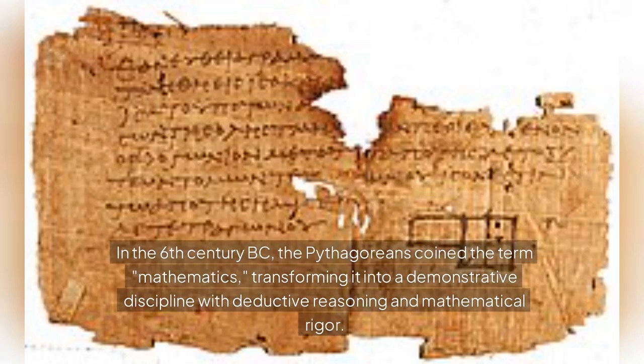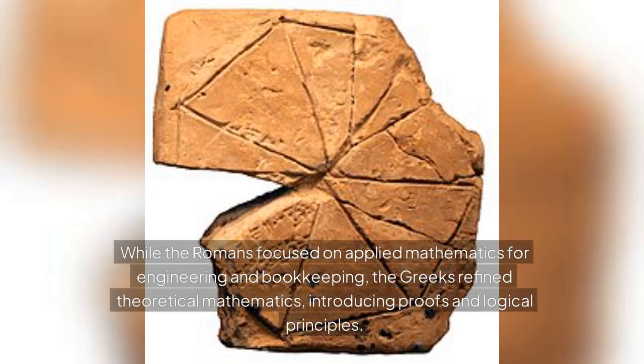In the 6th century BC, the Pythagoreans coined the term mathematics, transforming it into a demonstrative discipline with deductive reasoning and mathematical rigor. While the Romans focused on applied mathematics for engineering and bookkeeping, the Greeks refined theoretical mathematics, introducing proofs and logical principles.